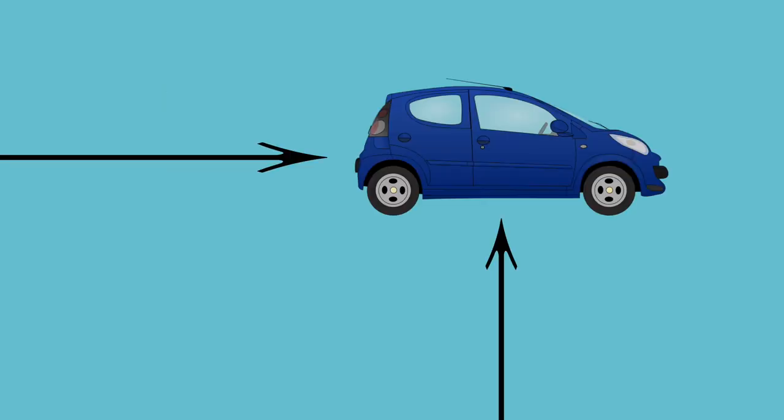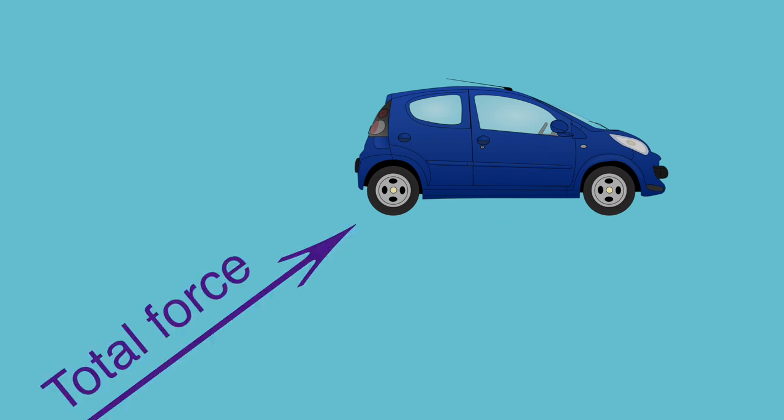Consider these two vectors, e dash and f dash. As you can see, they have different magnitudes and point in different directions. e dash is pointing straight up, whereas f dash points to the right. They might represent two forces acting on the same object, in which case the total force can be found by adding them together.